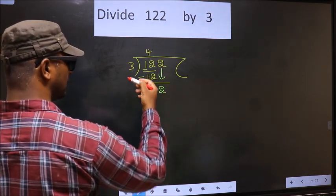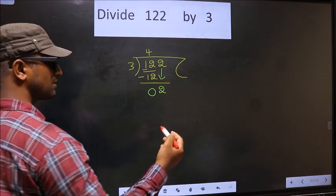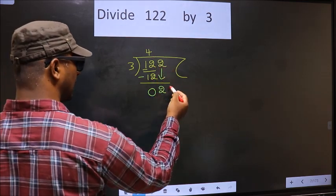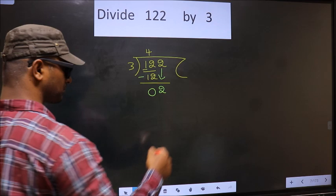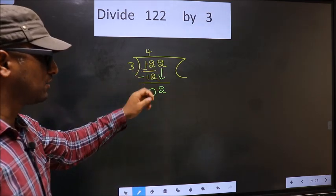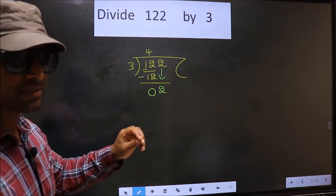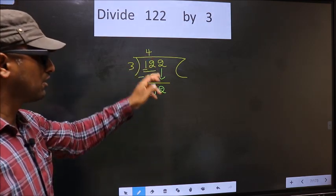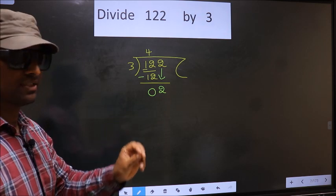2 is smaller than 3. So what many do is they put a dot and take 0 here, which is wrong. Just now you brought the number down, and in the same step you want to put a dot and take 0 here, which is wrong.